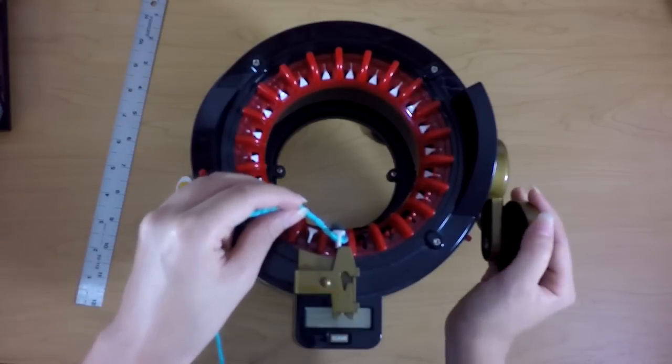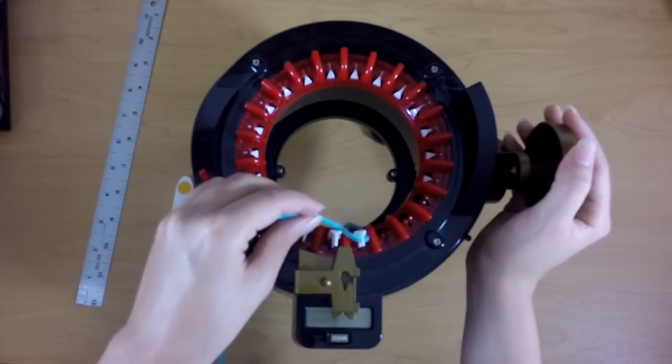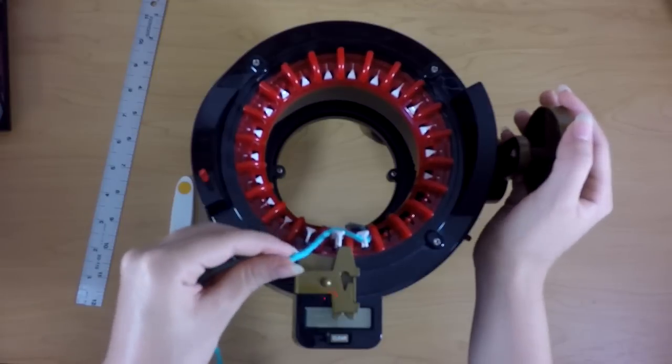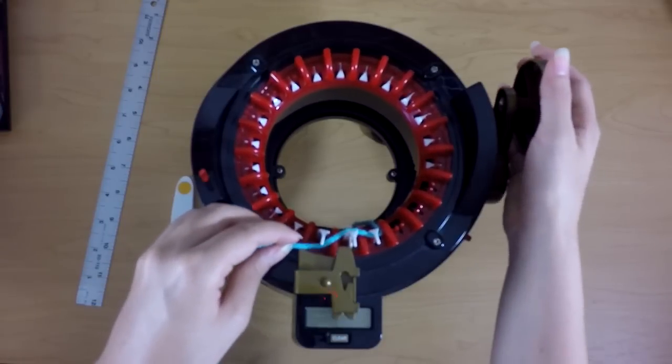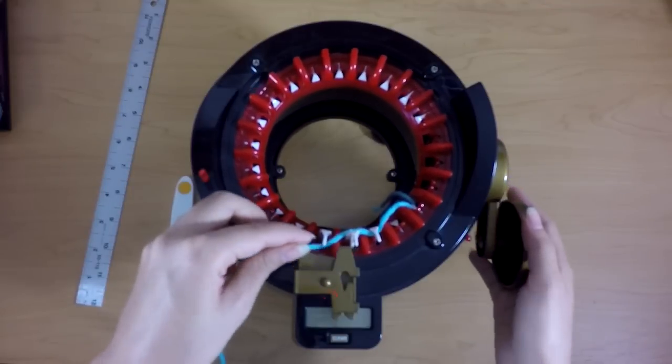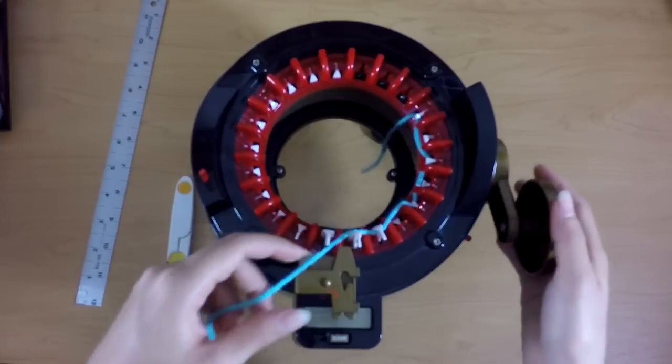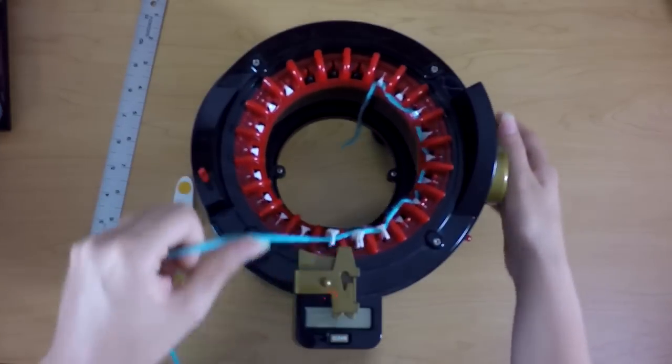Now I'm going to turn the handle away from me. Bring the yarn behind the second needle. Then I'm going to bring the yarn in front of the third needle. Behind the next one, in front of the next one, behind the next one. In front of the next one, behind the next one, all the way to the last white needle.